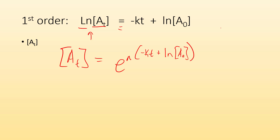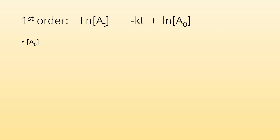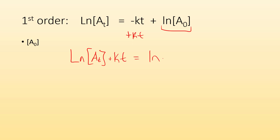What if I wanted to get a zero by itself? I'm going to have to add kt to both sides. So I get ln of the amount at that time plus kt equals the natural log of a zero. Now I've got the log part by itself, so I put the whole other side to the base of E: E to the (natural log of the amount at the time plus kt) equals a zero.